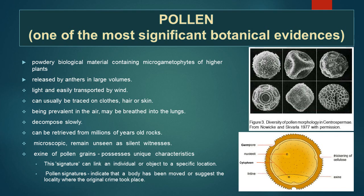Like spores, if you look at the picture of the pollen given in this slide, they have an exine. The exine of pollen grains of each plant possesses unique characteristics, and this signature can link an individual or object to a specific location. Pollen signatures may also indicate that a body has been moved or suggest the locality where the original crime took place. Therefore, pollen is one of the most significant botanical evidences in criminal cases.